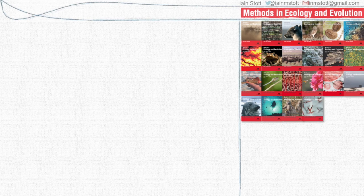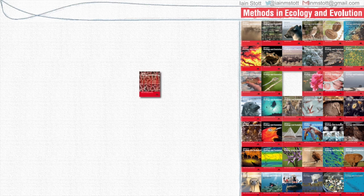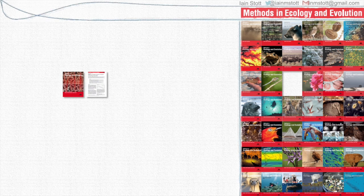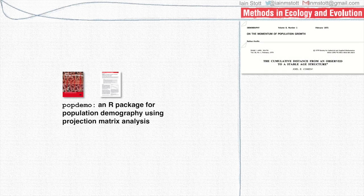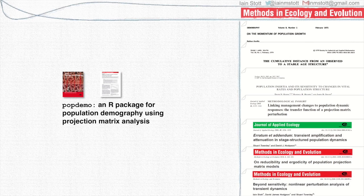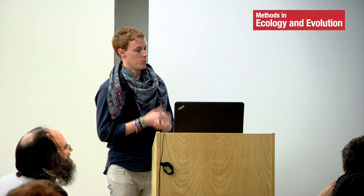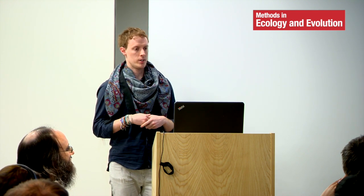In this edition of Methods in Ecology and Evolution, I published a little paper called PopDemo, an R package for population demography using projection matrix analysis. It pretty much does what it says on the tin. It was just a collection of things that I found really useful during my PhD. I was studying demography, using R, coding things up because they didn't exist for me to use already. Eventually I decided these things would be more useful in an R package, and then maybe that R package could be useful to other people, and then I decided maybe I'd try and publish a paper with it.